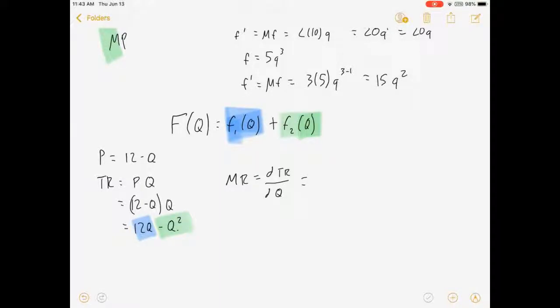And so I can say if I say that f1 is equal to 12q and f2 is equal to minus q squared, well, the derivative of 12q, that's a q to the 1, so 1 times 12 times q to the 1 minus 1, plus 2 times negative 1 and q to the 2 minus 1 is equal to 12 times q to the 0, which is just 12 times 1, minus 2q.